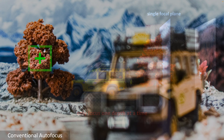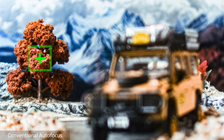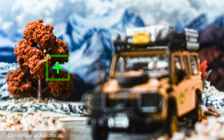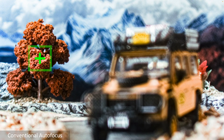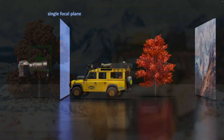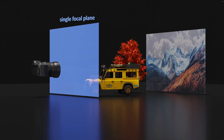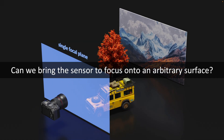In practice, when we focus on the background, the car blurs. Focusing on the car, the background blurs. We want to challenge this convention and ask: can we break this constraint? To be no longer confined to a single focal plane, can we bring the sensor to focus onto an arbitrary surface?